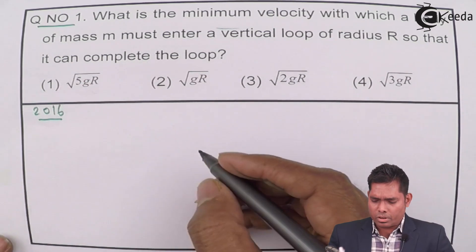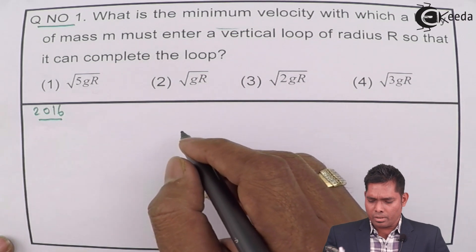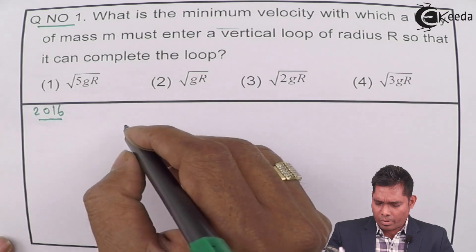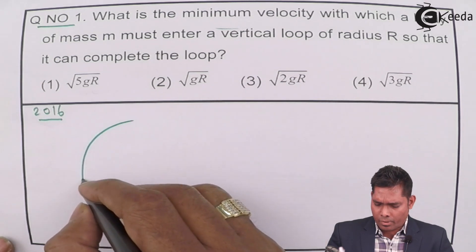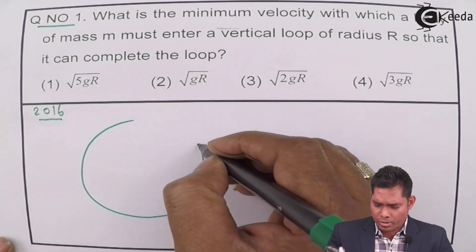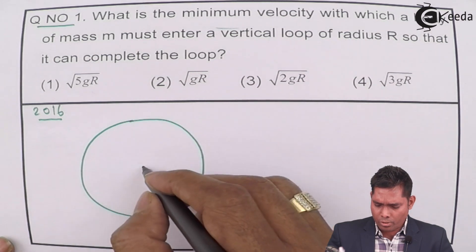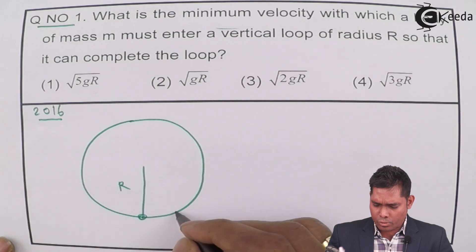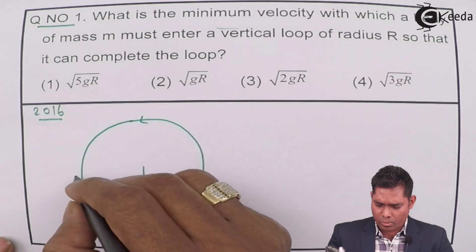This question seems to be incomplete, but we will have to write the answer. Firstly, we have to understand this is a vertical loop. This is a case of a vertical loop whose radius is R. The particle has to move in the vertical loop like this.